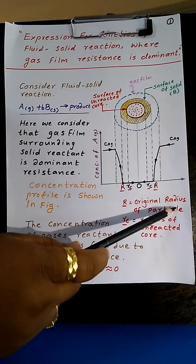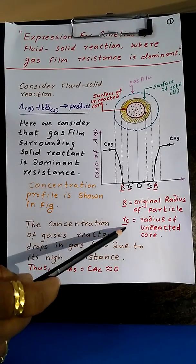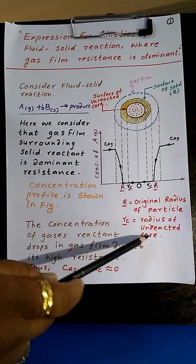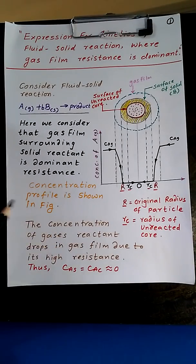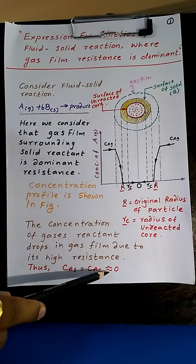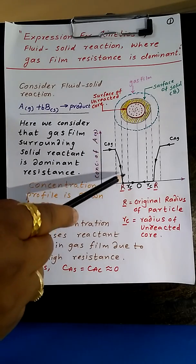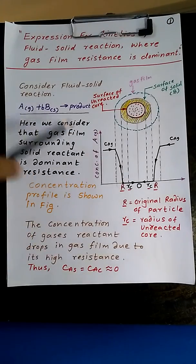R is the original radius of the particle and Rc is the radius of the unreacted core. The concentration of the gaseous reactant drops in the gas film due to its high resistance. Thus CAs and CAc values are very negligible, and the expression will directly depend upon CAg.